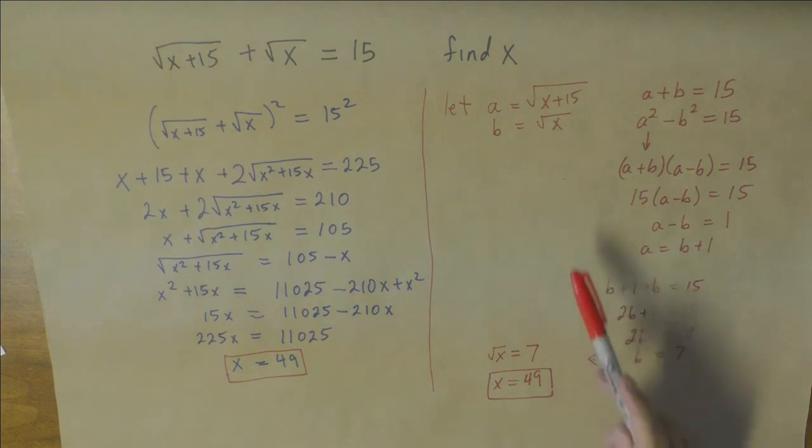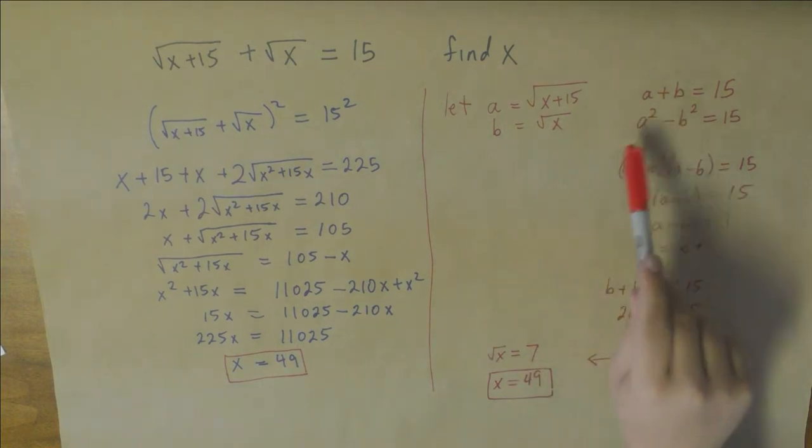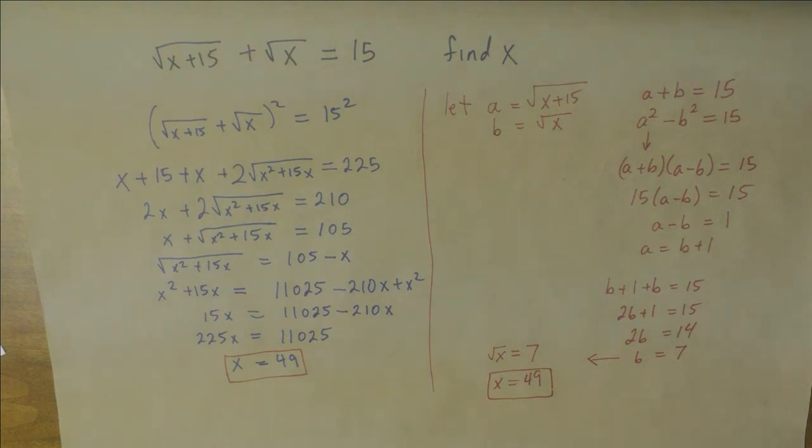And I think there's fewer chances to make an error here. But it does require making the observation that x plus 15 and x are squares, and that they differ by 15, and knowing about factoring a difference of squares and things like that. This way here is actually perfectly reasonable, and it's probably the way I would expect to be used on a test or something like that, simply because it doesn't require any extra knowledge. It requires you knowing how to multiply out a binomial, squaring things, and doing basic algebra. And that's about it. This side requires just a little bit more information. Basically you get to short circuit some steps there, and it just moves along.